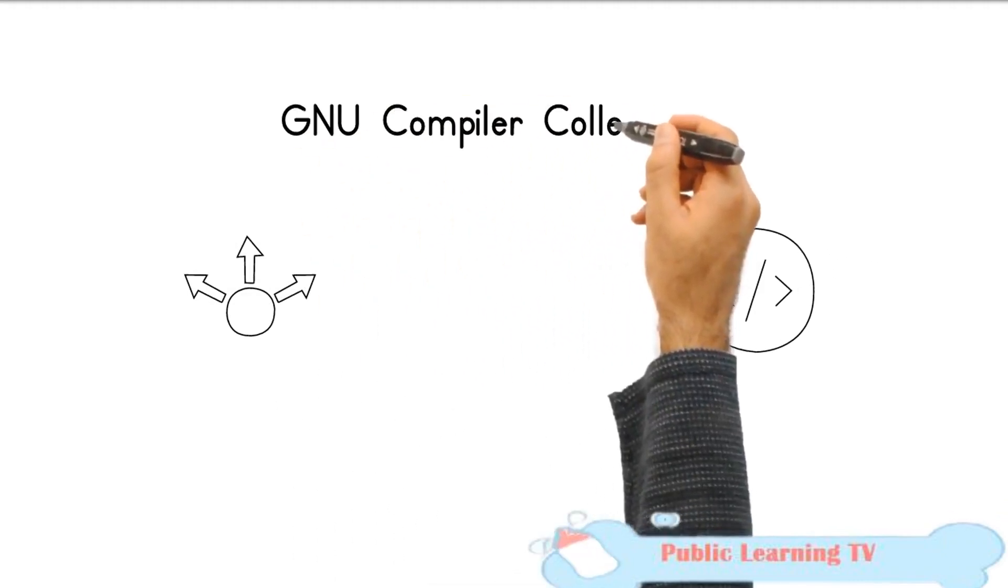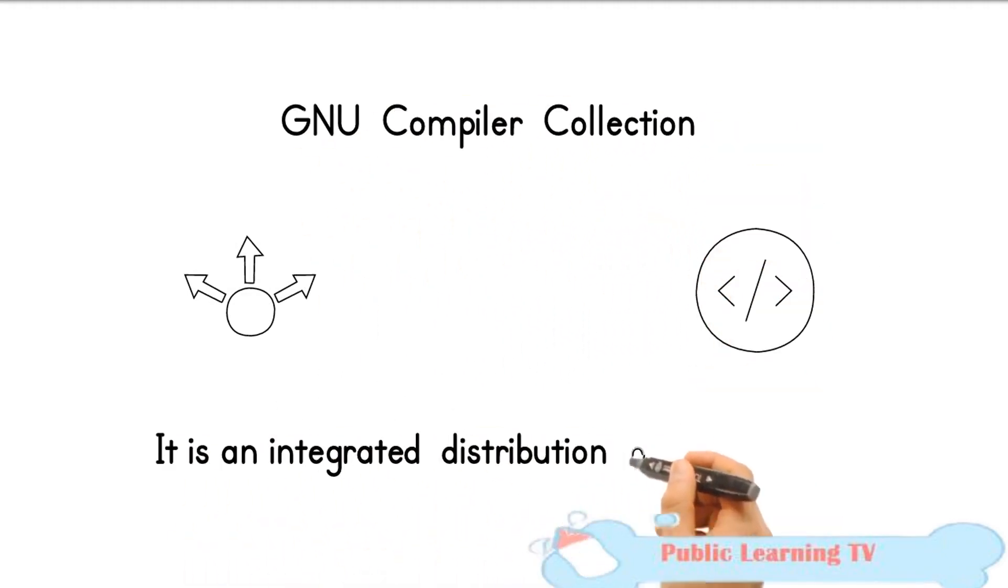GCC. What is GCC? GCC stands for GNU Compiler Collection. It is an integrated distribution of compilers for several major programming languages.